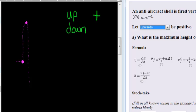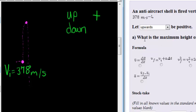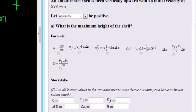Now we say an initial velocity of 378 meters per second, so our initial velocity is equal to 378 meters per second. What is the maximum height of the shell?